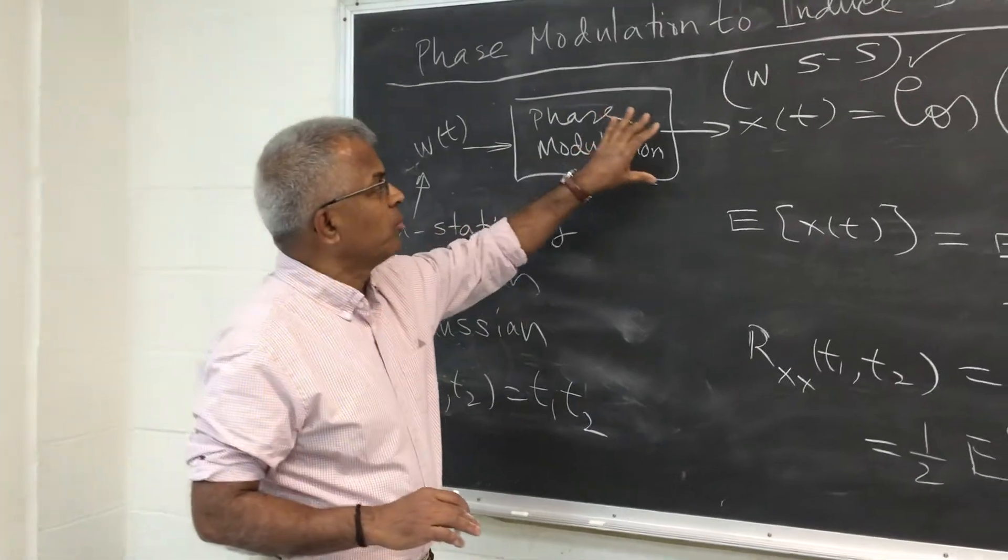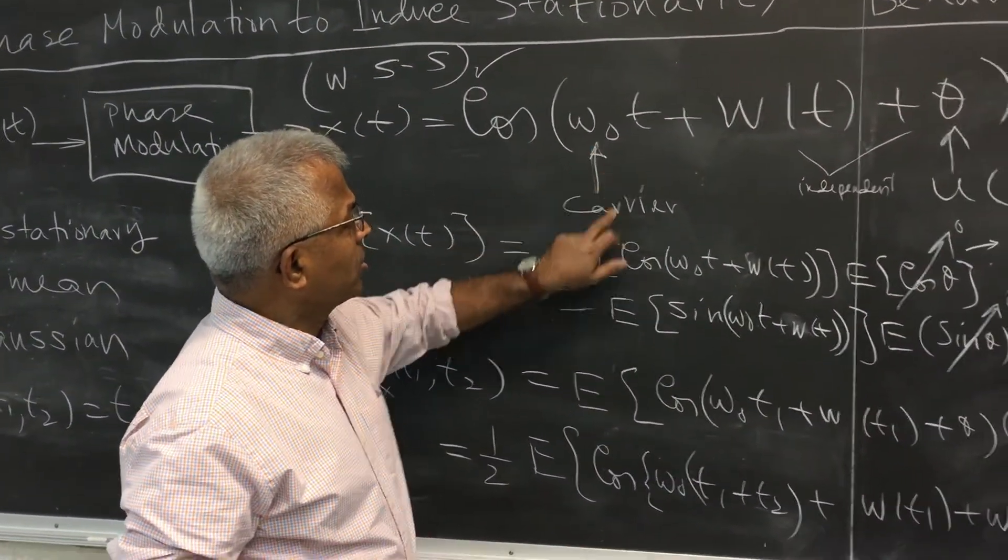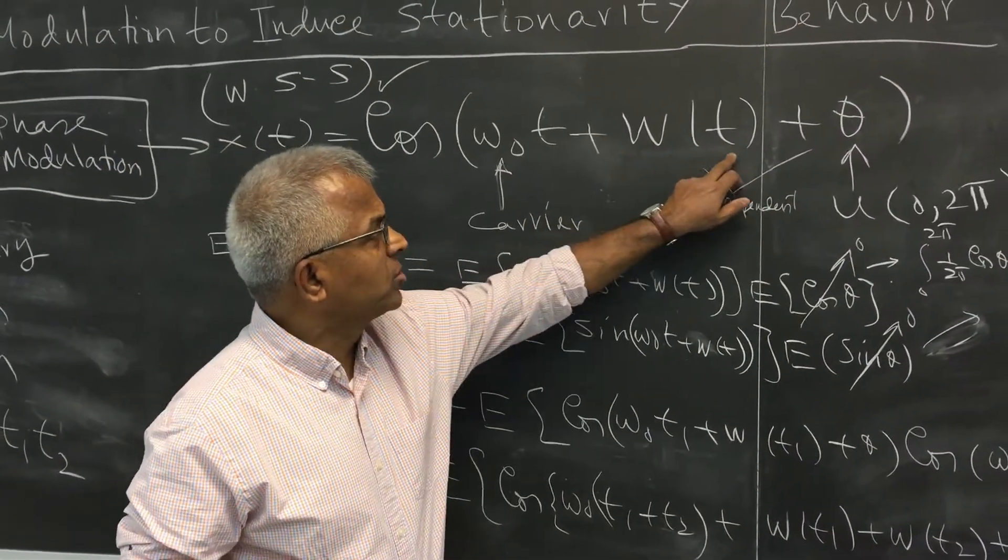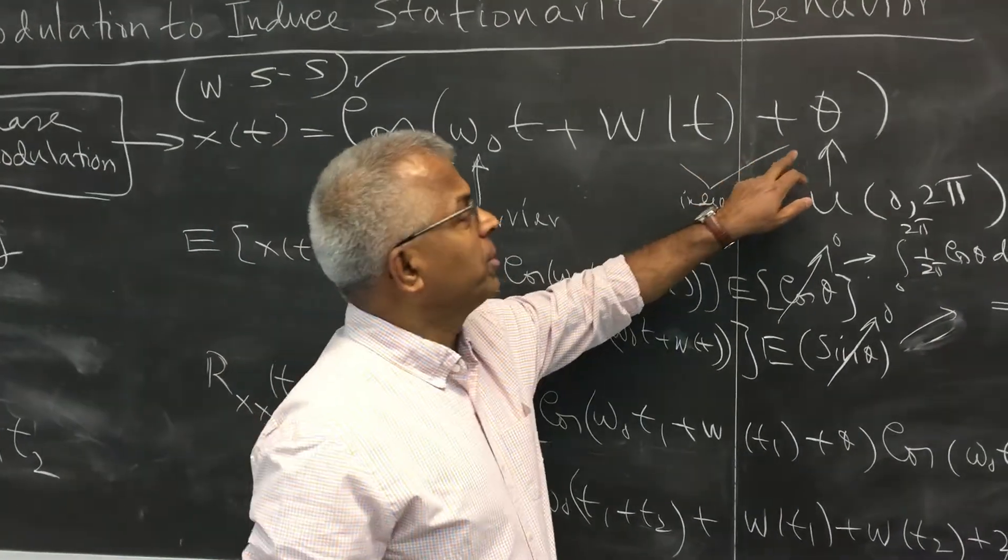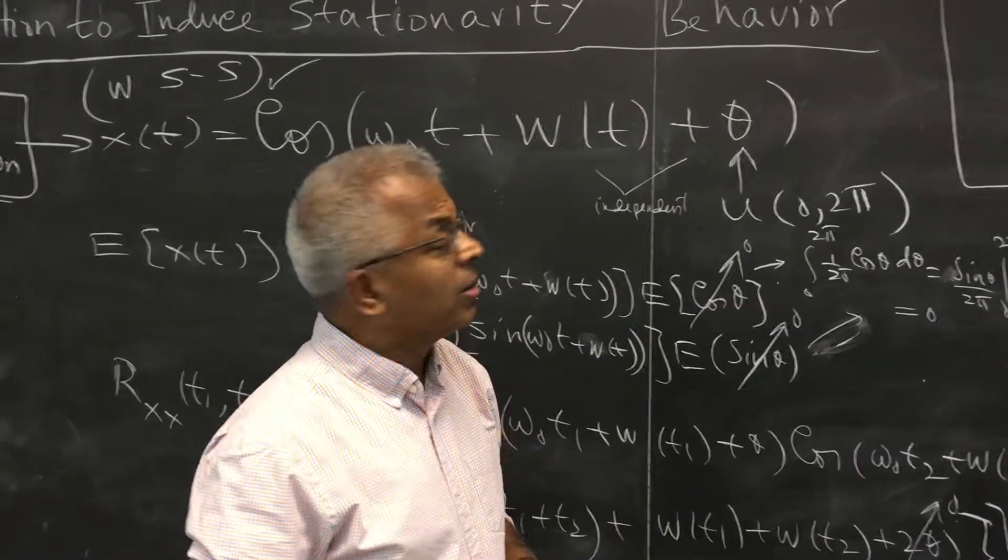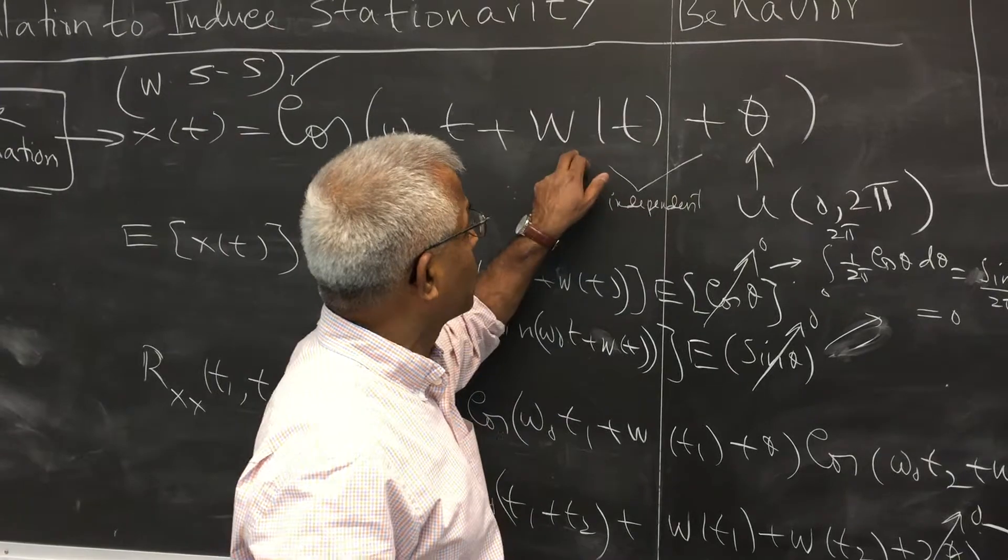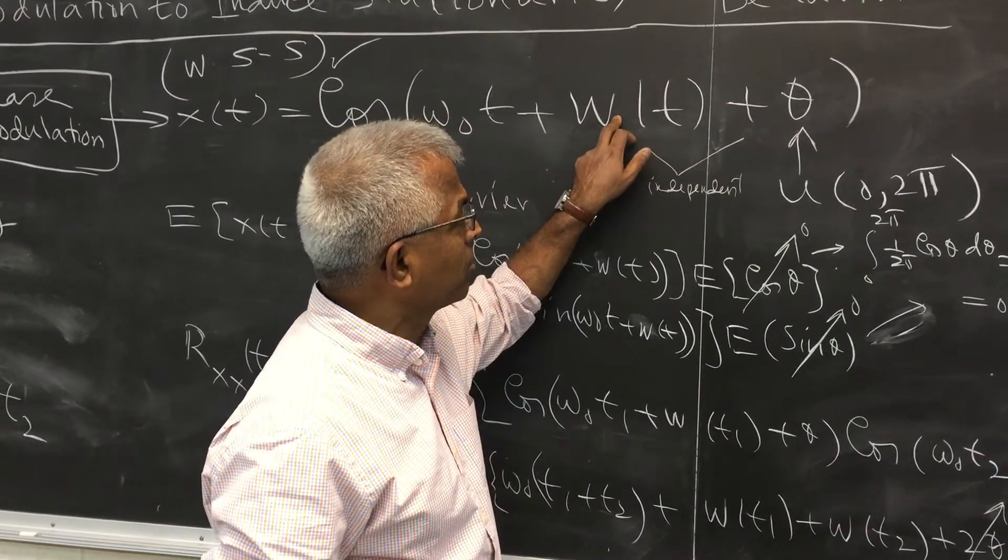This is being phase modulated. The output is of this form: cosine omega 0 t plus the phase modulation w(t) plus theta. By the time it comes to you, it's reasonable to assume that the phase also has a random component in it, some random variable which is uncorrelated with this or we will assume it to be independent to make progress. So theta is a uniform random variable from 0 to 2π.